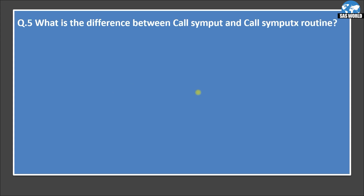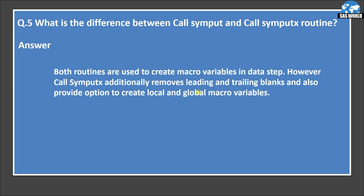What is the difference between CALL SYMPUT and CALL SYMPUTX routine? This question is always asked. Both routines are used to create macro variables in the data step; however, CALL SYMPUTX additionally removes leading and trailing blanks. Another additional feature of CALL SYMPUTX is that it provides options to create local and global macro variables. So CALL SYMPUTX is more advanced and more useful, and we should use CALL SYMPUTX over CALL SYMPUT.